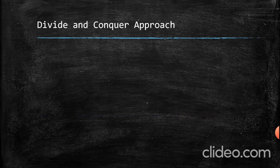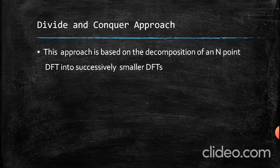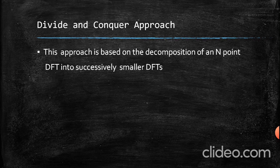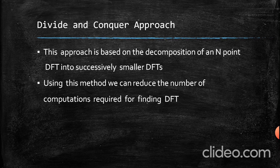What is meant by the divide and conquer approach? This approach is based on the decomposition of an N-point DFT into successively smaller DFTs. We can find the DFT of a given input signal using other methods like the coefficient matrix. The advantage of using divide and conquer is that we can reduce the number of computations — like additions and multiplications — required for finding the DFT.